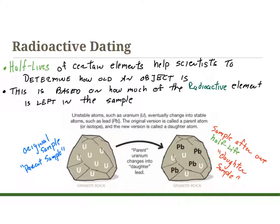Radioactive dating says that half-lives of certain elements help scientists determine how old an object is. This is based on how much of the radioactive element is left in the sample after a half-life or after a period of decay. The picture shown here illustrates that granite rock at 100% uranium will decay and go through one half-life, turning into a rock that has some lead and some uranium in it.